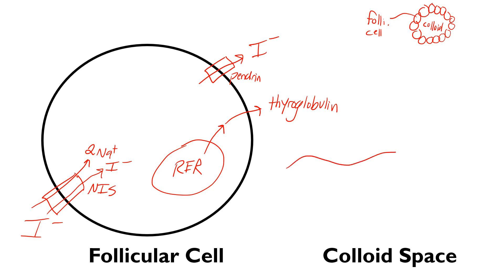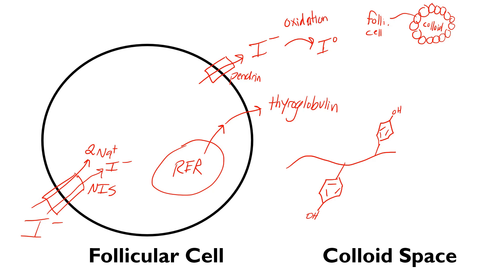Thyroglobulin is basically a long protein with a lot of tyrosine segments on it. When the iodine exits out through the pendrin transporter, the iodine is converted from iodine with a negative charge to atomic iodine. This happens via oxidation, and the enzyme responsible for this oxidation — going from iodine with a negative one charge to iodine with a zero charge — is thyroid peroxidase.